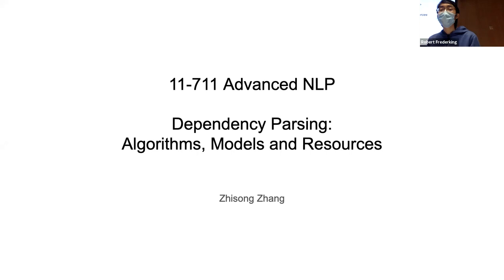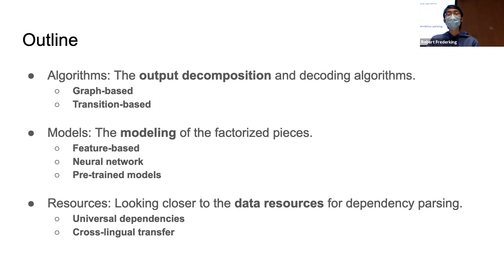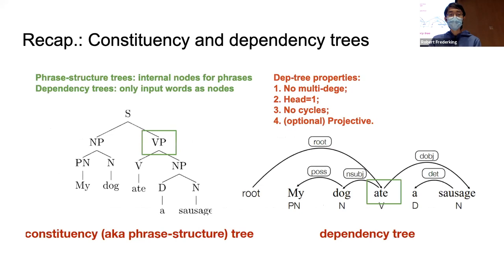Let's get started. Today I'll talk about parsing — specifically algorithms, models, and resources. Here's the outline. The first piece is about algorithms: how do we decompose the complex output of dependency trees. We have two conventional methods for this. Next we'll talk about models, from very old feature-based models to old neural networks and recent pretrained models. The last piece is about resources, specifically universal dependencies and cross-lingual transfer.